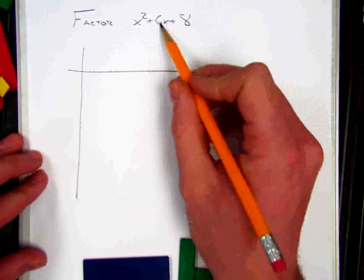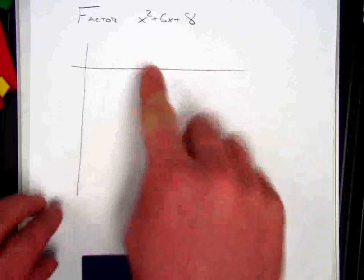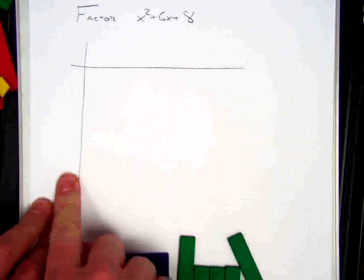Since factoring is really just undoing that multiplication we've already done, we're going to start with the product in here and then see if we can guess what the factors were on the outside.